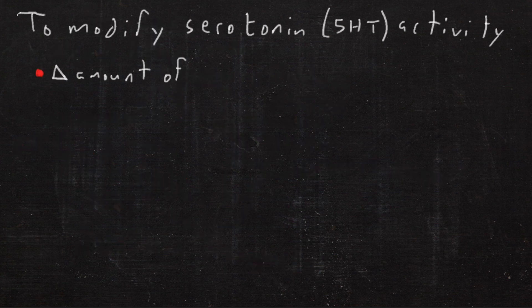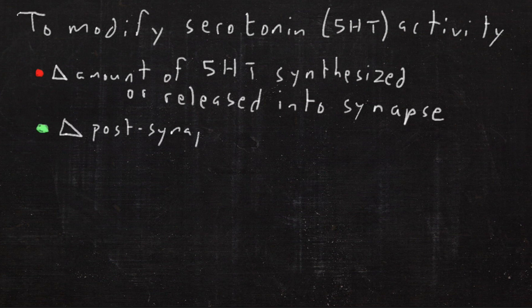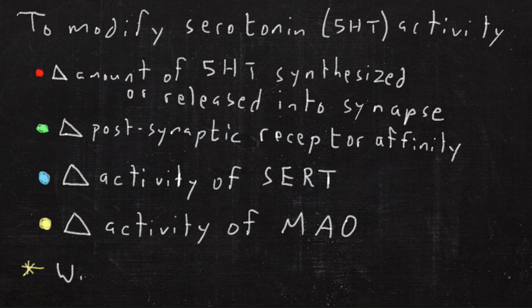So to modify serotonin, you can change the amount of serotonin synthesized or released into the synapse. You can change postsynaptic receptor affinity. You can change the activity of SERT or the activity of MAO.